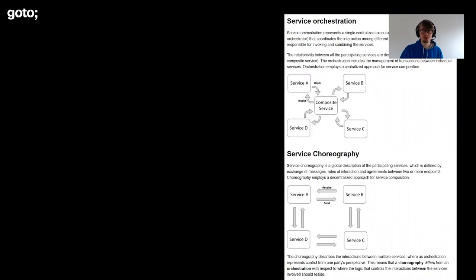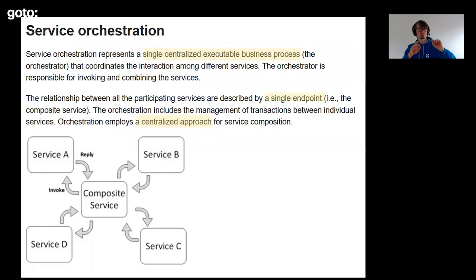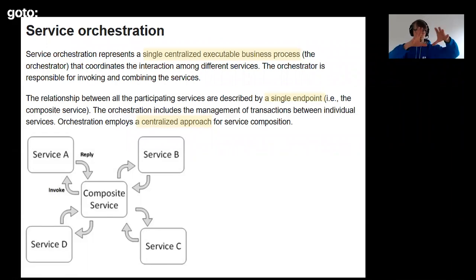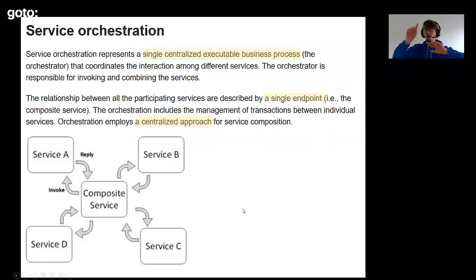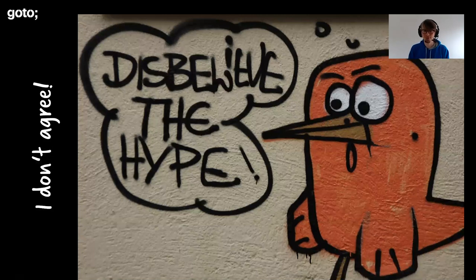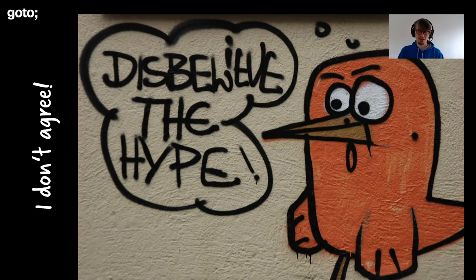I'll go through that article quickly. The answer given there — which a lot of people consider the standard conception — says service orchestration is a single centralized executable business process, with one orchestrator responsible for invoking other services. You often hear the metaphor of a central spider in the web: one central single endpoint that does all the things and orchestrates all other services. I want to flag this clearly: I don't agree with that definition at all, and I'll come back to why.